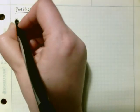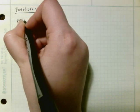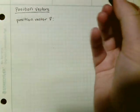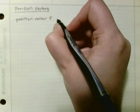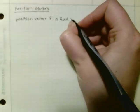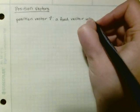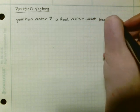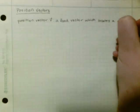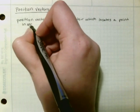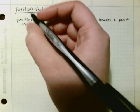All right, position vectors. So if we had a position vector, which is denoted as R, and that is defined as a fixed vector which locates a point in space relative to another point.